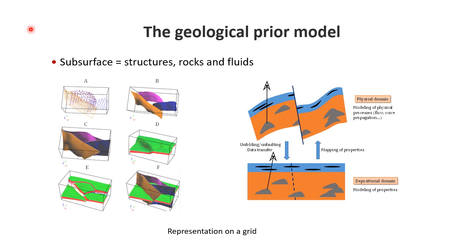We'll talk about the geological prior model. The subsurface is often modeled through three different components: the layering and faulting (the structures), the rocks contained within those layers, and the fluid contained within those rocks. Subsurface structures are typically obtained from drilling or geophysical data—for example, interpretations of stratigraphic surfaces or faults from seismic data, forming a structural model. Because the seismic data interpretation is uncertain, there will be uncertainty on the structural model being generated.